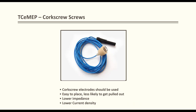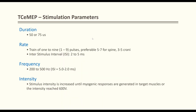Cork screw electrodes should always be used — they are easy to place at an angle, less likely to pull out, have lower impedance over a larger contact area, and reduce the risk of skin burn compared to pin needles. Stimulating at 200 volts spreads the voltage over a larger area, reducing burn risk. Cork screws cover about half a centimeter of area on the brain, improving motor cortex activation compared to thin pin needles.